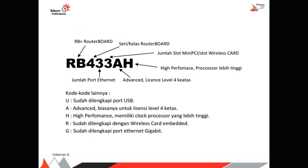Di sini saya menjelaskan kode-kodenya. Diawali dengan RB, itu merupakan singkatan dari RouterBoard, tipenya RouterBoard. Kemudian angka 4, itu merupakan seri atau kelas dari RouterBoard. Sampingnya ada angka 3, yang merupakan jumlah total dari port ethernet atau adapter. Kemudian sampingnya lagi ada angka 3, itu merupakan jumlah slot untuk wireless card. Kemudian ada kode A, itu merupakan advanced dengan lisensi level 4 ke atas. Dan huruf H, itu merupakan sebuah perangkat yang menggunakan prosesor yang cukup tinggi atau high performance.